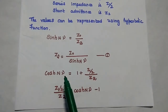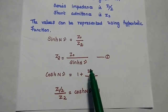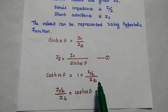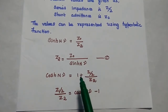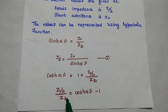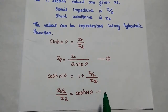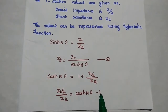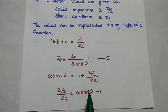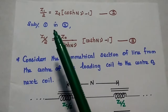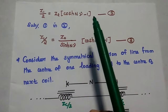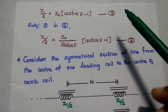Next, cosh(Nγ) is equal to 1 plus the series impedance value Z1 by 2 divided by the shunt admittance Z2. Moving the 1 to the other side, we get Z1 by 2 divided by Z2 is equal to cosh(Nγ) minus 1. Moving Z2 to the numerator, Z1 by 2 is equal to Z2 multiplied by (cosh(Nγ) minus 1). Consider that as the second equation.